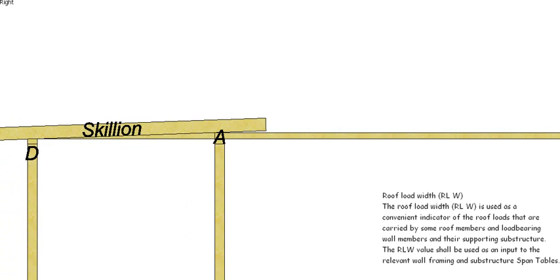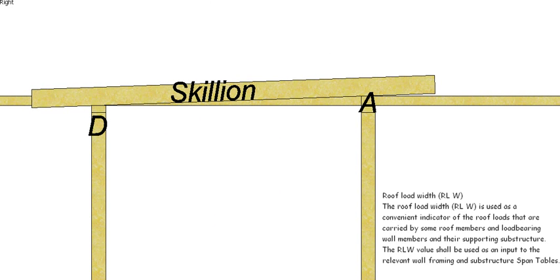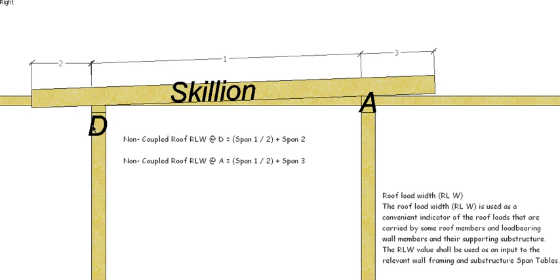Okay, let's go to the next one. For a skillion roof we want to know the RLW at D, so it's going to be span 1 which is the main span of the rafter divided by 2 plus the overhang at this end. And if we want to know the RLW at span A, then it's going to be half the span of the main rafter plus the overhang at this end. So it will give you the RLW for a skillion roof, again a non-coupled roof.